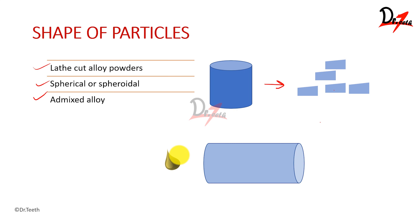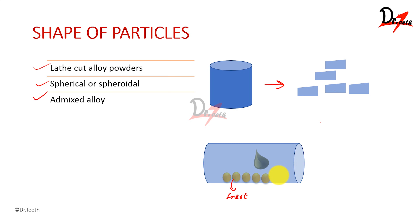For spherical or spheroidal particles, we take a molten alloy and spray it inside a column containing an inert gas. As the droplets of alloy travel down due to gravity, they solidify and form spherical or spheroidal shapes. Admixed alloys are a combination of different shapes, such as lathe cut and spherical particles together.